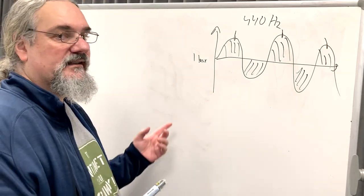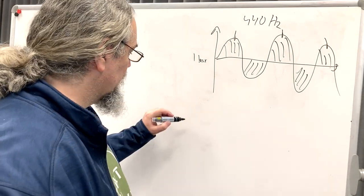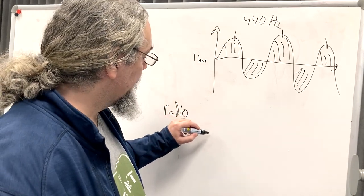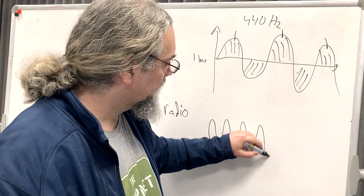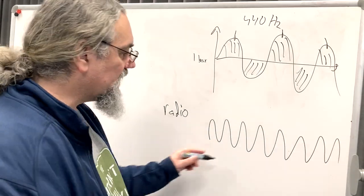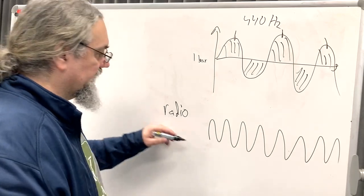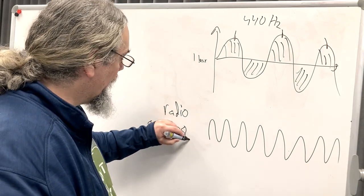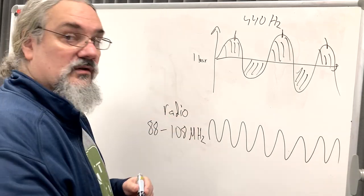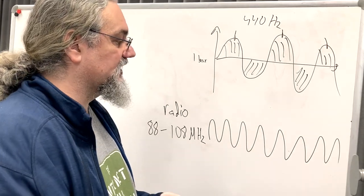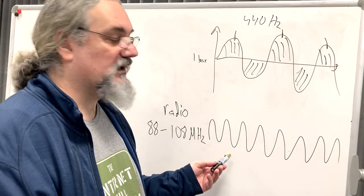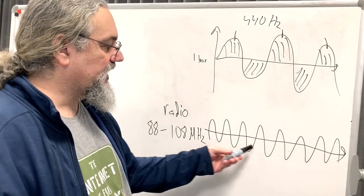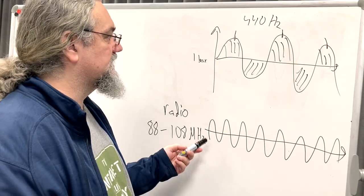If you transmit this as analog radio, you start with a radio carrier wave — that's a sine wave going up and down. The carrier wave is typically between 88 to 108 megahertz. The carrier wave of the radio signal has a much higher frequency than the audio being transmitted. If the carrier wave is unmodified, it means there is no signal at all — it's silent.